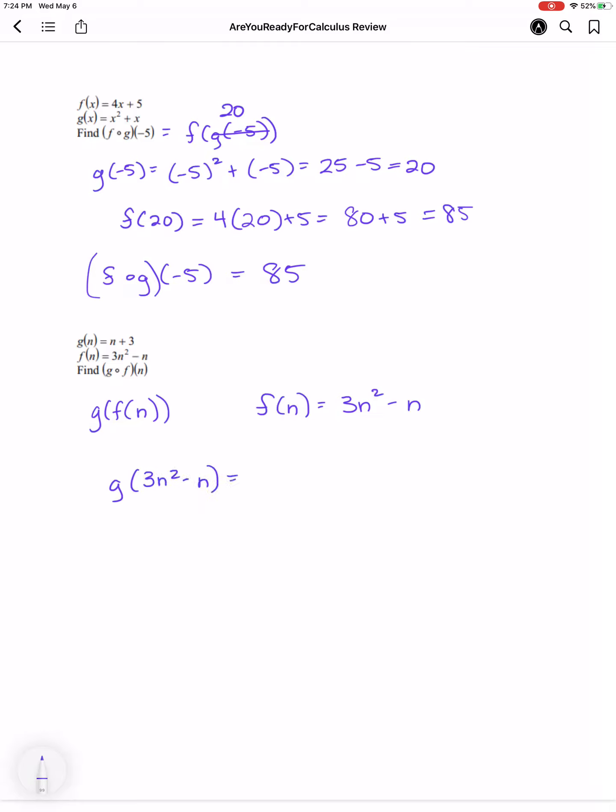So now we're going to find g of 3n squared minus n, which will be, for that n, 3n squared minus n plus 3.